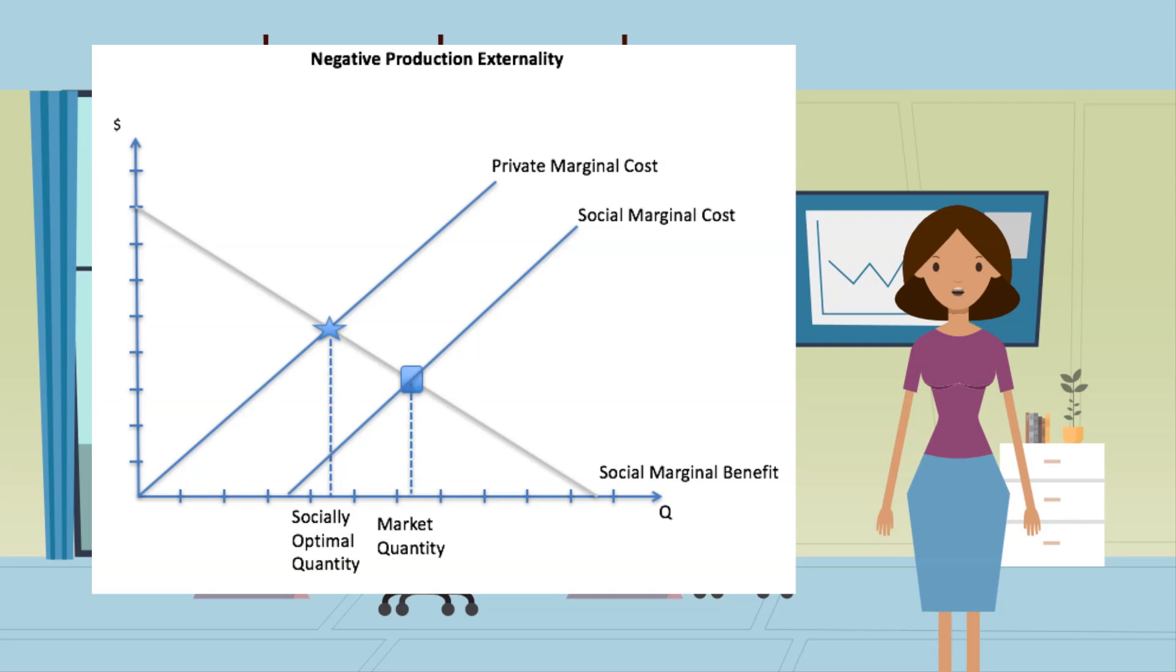This activity causes damages to crops, materials, historic buildings, and public health. The socially optimal amount of air pollution is much lower.